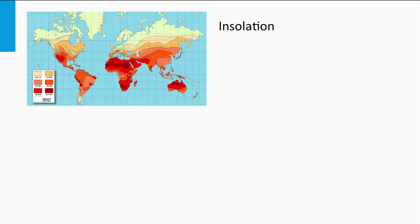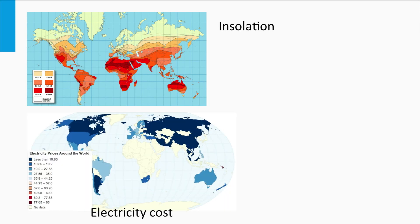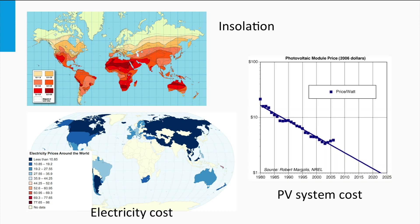Note that the payback period depends on the location of implementation of the PV system. Of course, the sunnier the location, the greater the PV yield and the faster the payback. Also, the savings by the PV system not only depends on PV yield but also the grid electricity costs. Finally, the initial PV system costs are also a major factor in deciding the payback period.